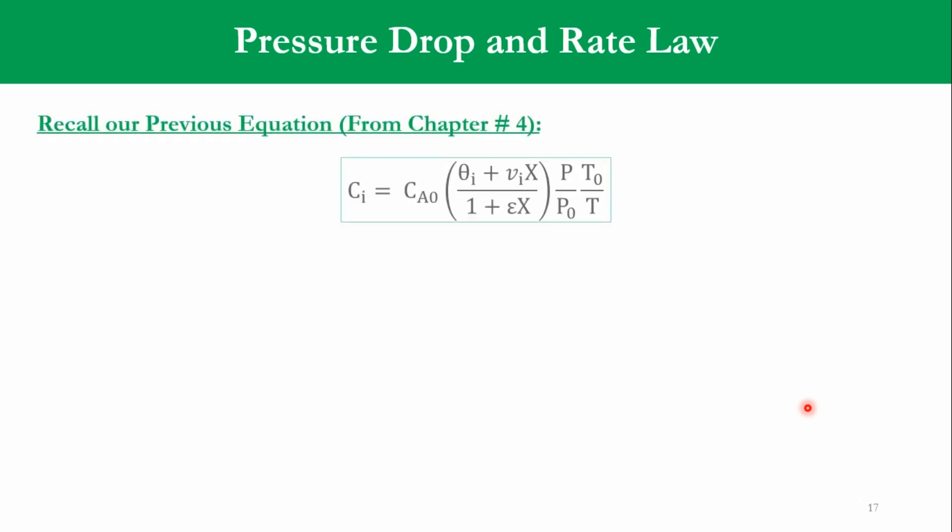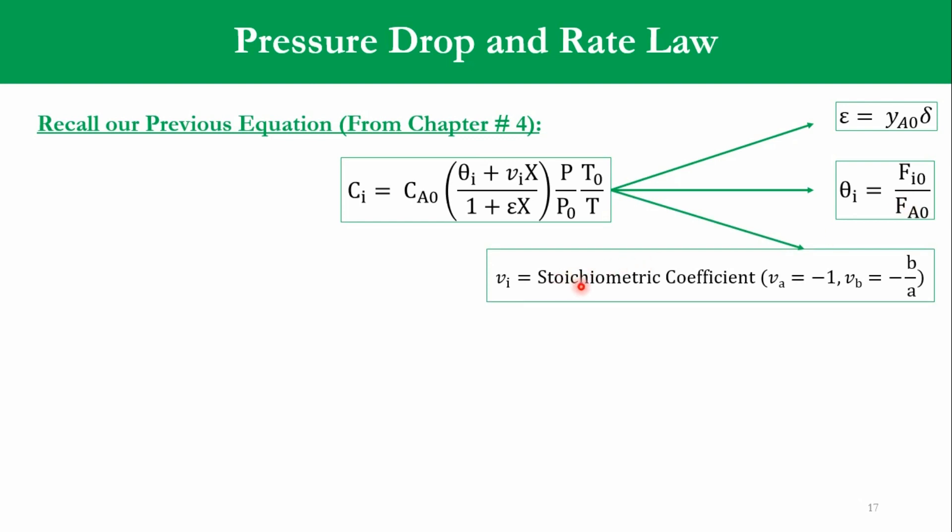So starting with pressure drop and its significance and accordingly linkage with the rate law. If you remember our previous equation, that Ci = CA0(θi + νi·x)/(1 + εx)·(P/P0)·(T0/T). These are the temperatures initial and final pressure. x is the conversion, epsilon is sigma into YA0, νi is the stoichiometric coefficient, θi = Fi0/FA0, and CA0 is the initial concentration of limiting reactant, and Ci corresponds to the species. So as you can see, ε = YA0·Σνi, θi = Fi0/FA0, and νi is the stoichiometric coefficient.